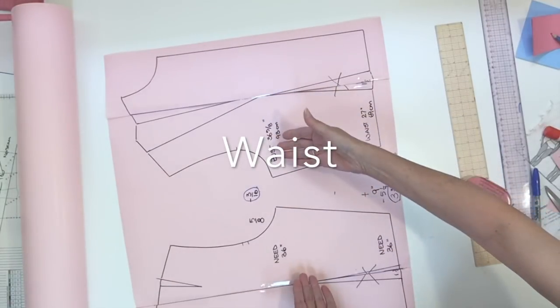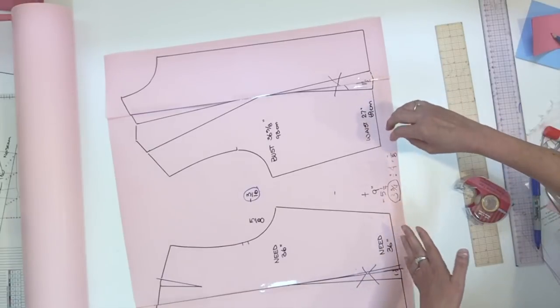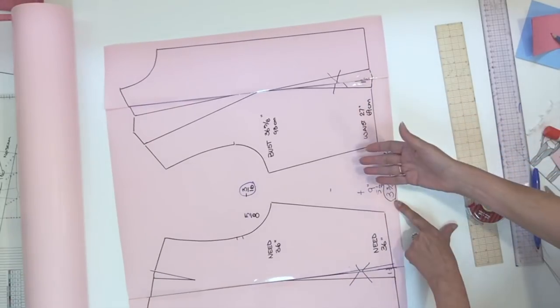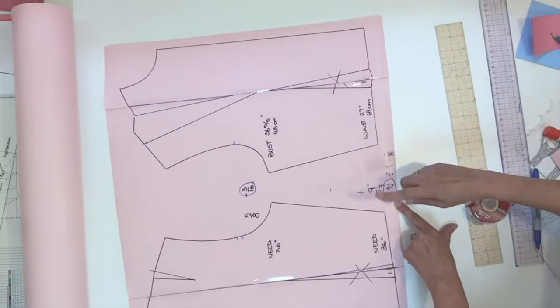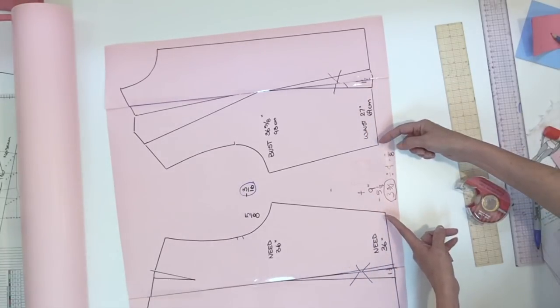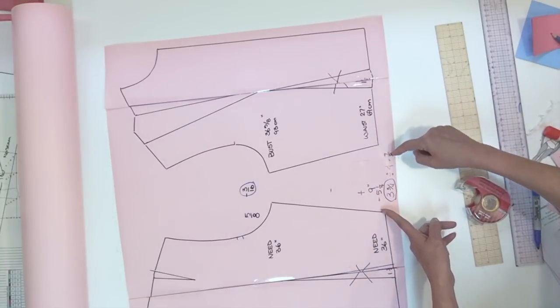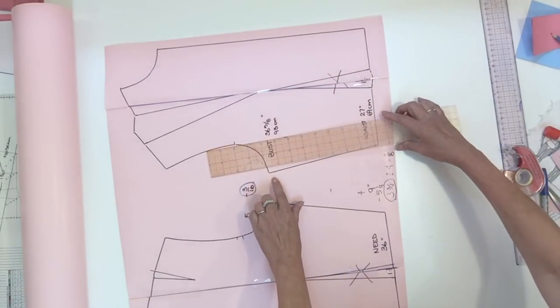Now that the bust is the right measurement we just have to finish the correction with the waist measurement. So the difference we have after we cancel both darts was three inches and three quarters. I divide that by four so I could add one quarter of the difference on each quarter of the garment. So let's start with the front.